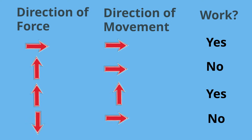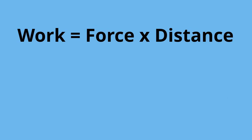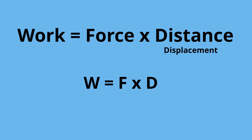You can calculate work by multiplying the force applied to the object by the distance — also called displacement — that the object moves. The formula is W equals F times D.